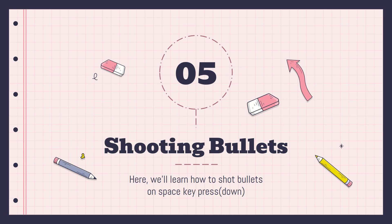What we want to cover in this video is learning how to shoot bullets. Our spaceship is going to shoot bullets, and when those bullets hit alien crafts, the alien craft dies. In the last tutorial we covered displaying enemies, but now we'll do the bullet shooting and then move on to enemies.